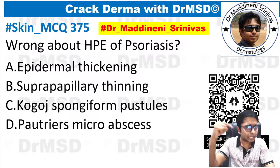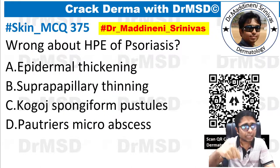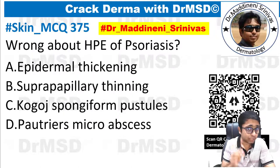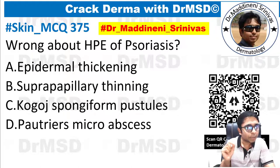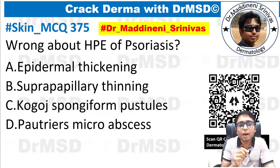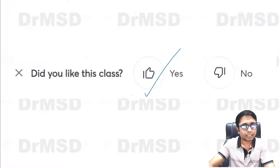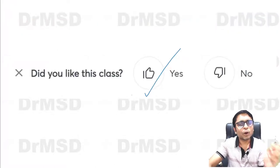Here is tomorrow's question: 'What is wrong about the histopathological examination of psoriasis — epidermal thickening, suprapapillary thinning, Kogoj spongiform pustules, Munro microabscesses?' What do you think is the answer? Please do leave it in the comment section.